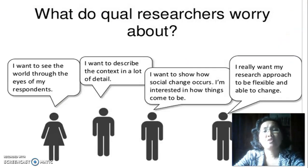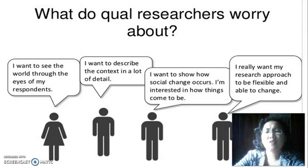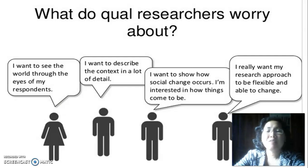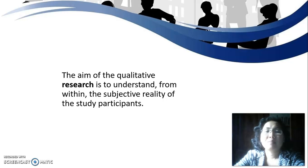Qualitative researchers worry about: I want to see the world through the eyes of my respondent. I want to describe the context in a lot of detail. I want to show how social change occurs. I am interested in how things come to be. I really want my research approach to be flexible and able to change. The aim of qualitative research is to understand from within the subjective reality of the study participants.